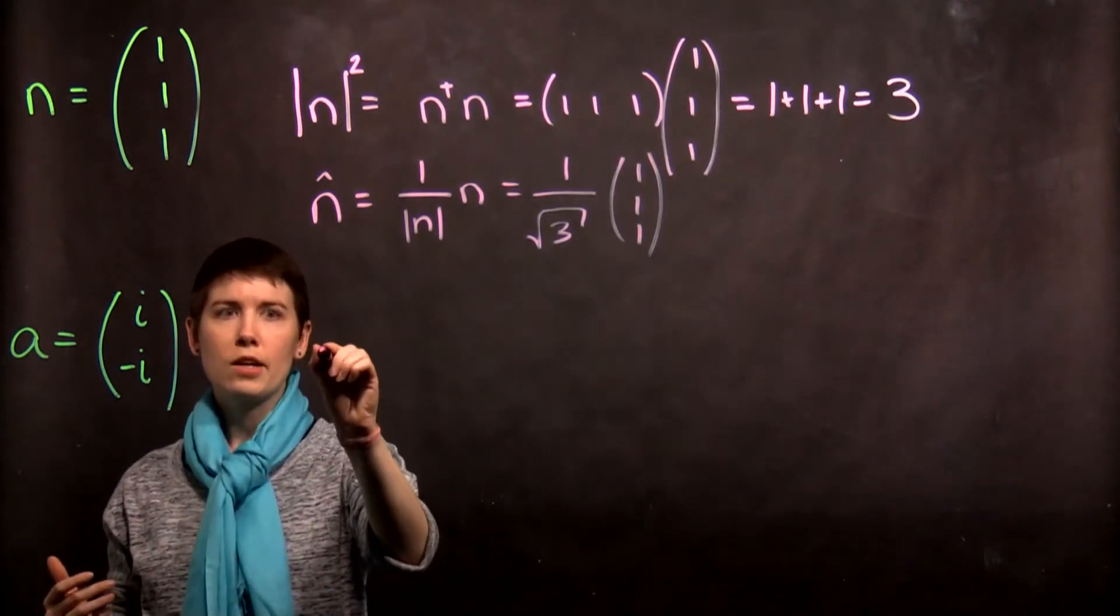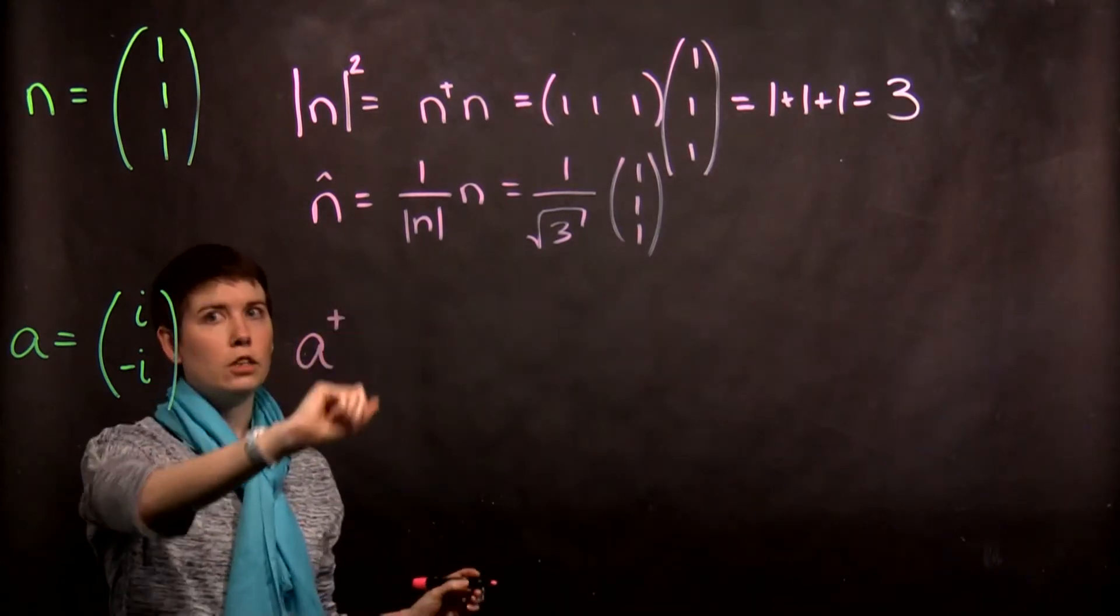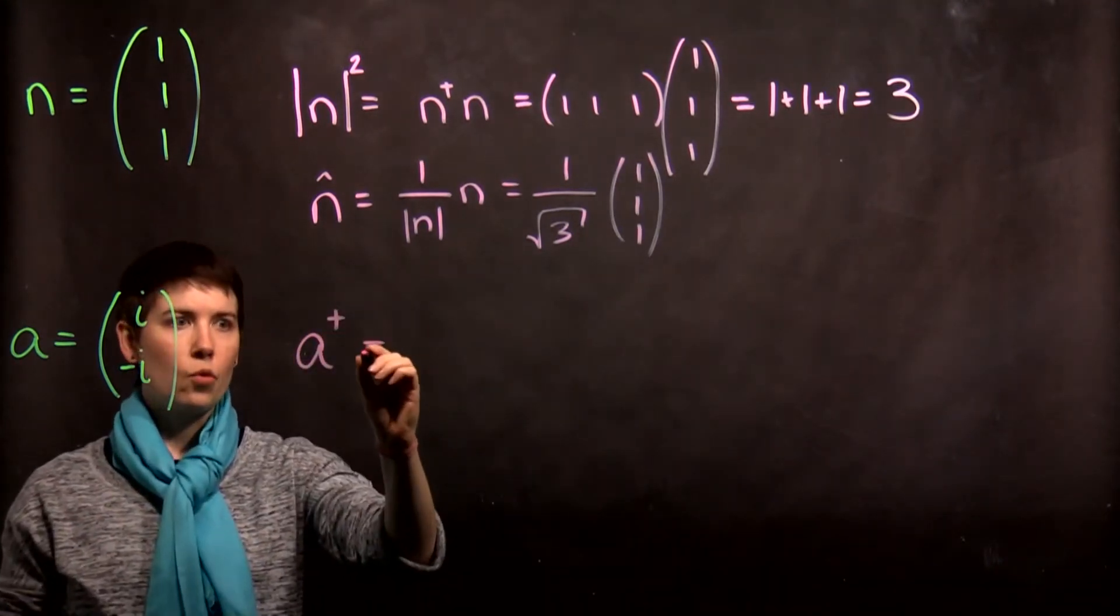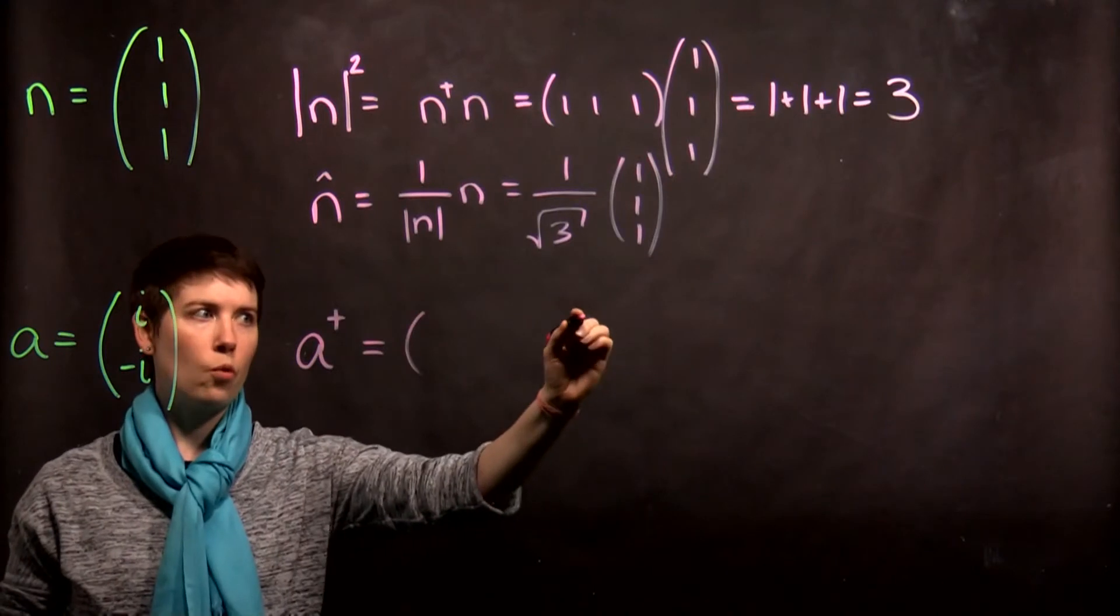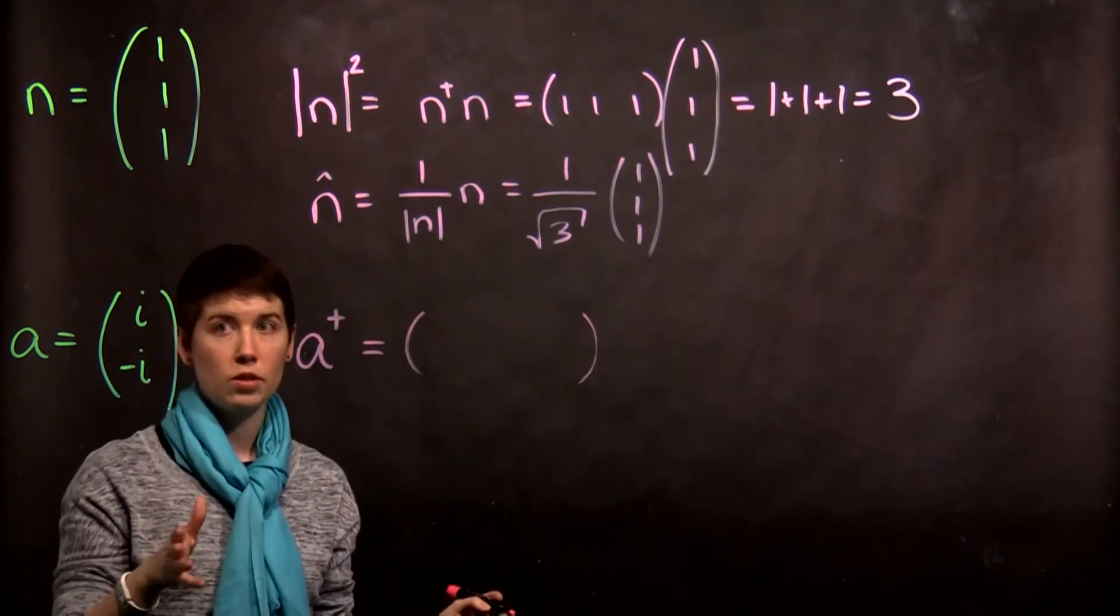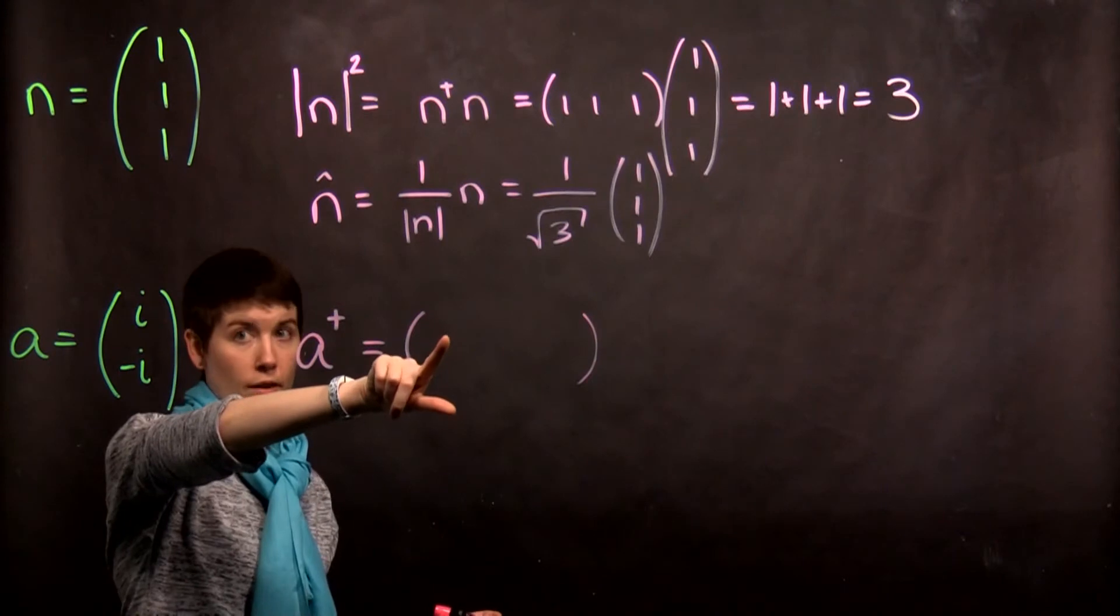So, the first thing let's do is actually write down what a dagger is. And a dagger is going to be transposed, so it's going to be, instead of a column, it's going to be a row vector. And this first entry stays on the left.